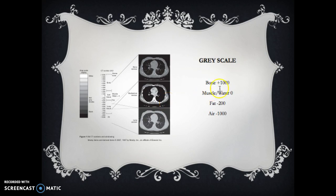We're looking at air is going to be black and bone is going to be white just like on an x-ray. Bone is considered plus a thousand. Muscle and water are considered the neutral, the zero. That is the ground right there.